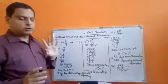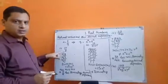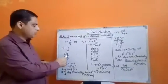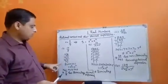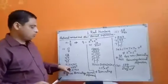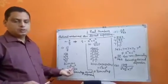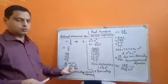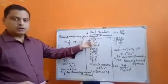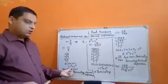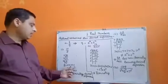This is for rational numbers only. First, we take an example of 17 upon 8. Here the denominator is 8. We take the prime factors of 8: 8 = 2 × 2 × 2, that means 2 power 3, and we can write it as 2 power 3 into 5 power 0, because any one of m or n can be 0. So we can write it as 2 power 3 into 5 power 0, which is of the form 2 power m into 5 power n, where m is 3 and n is 0.